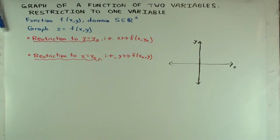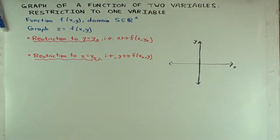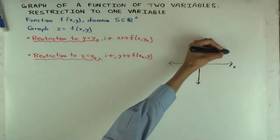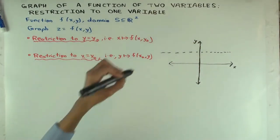What does it mean to restrict to y equals y0? First, what does a line like y equals y0 look like? Well, y is fixed and x is still allowed to vary, so it will be a horizontal line — something like this.